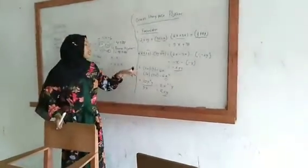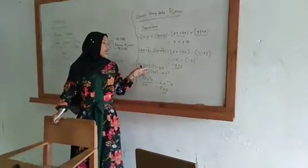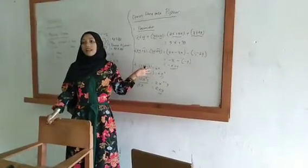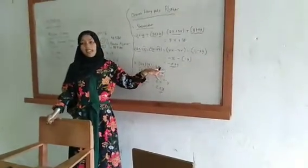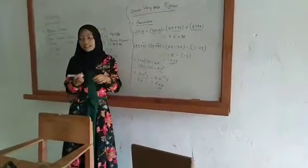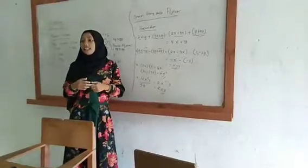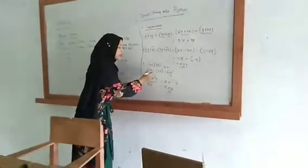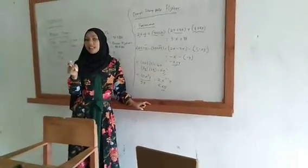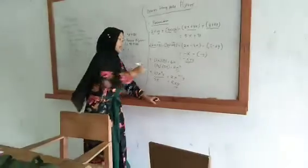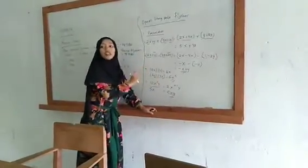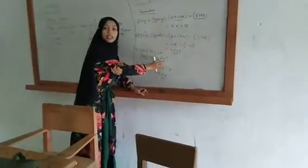Selanjutnya adalah perkalian. Ini contohnya 2X dikali 3, berarti langsung aja kita kalikan 2 dikali 3 sama dengan 6, ikutkan yang X. Contoh yang kedua 2X dikali 3X, 2 dikali 3 berapa? 6. Ini kan sama-sama punya variabel X, berarti pangkat dari variabelnya itu kita jumlahkan. Ini pangkatnya 1, ini juga pangkatnya 1, berarti 1 tambah 1, makanya dia 6X kuadrat.